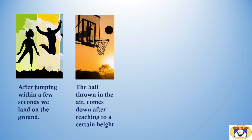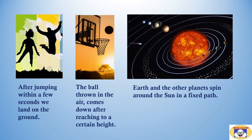Earth and the other planets spin around the sun in a fixed path. All these examples are suggesting something.